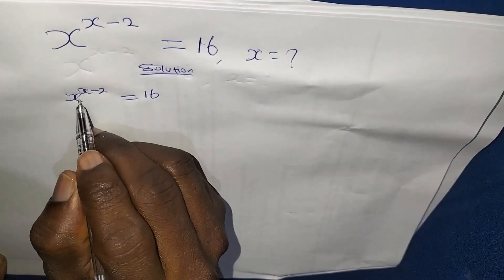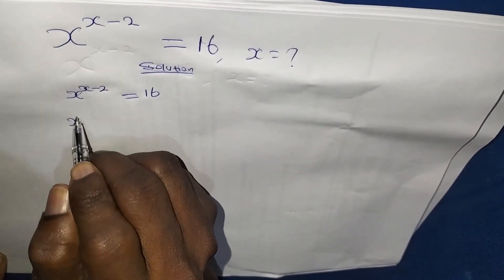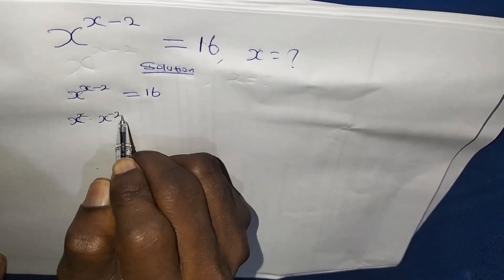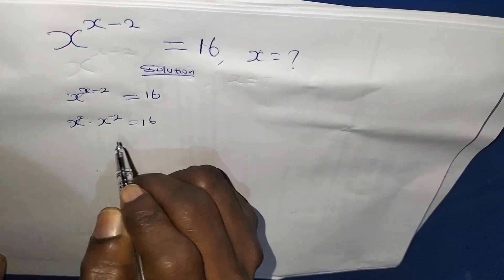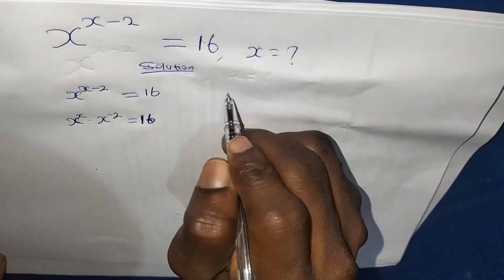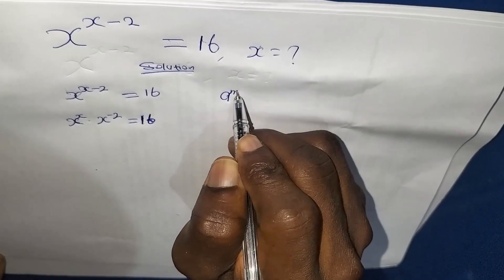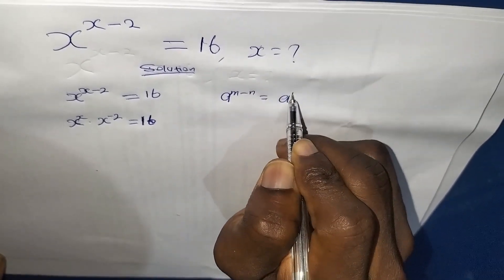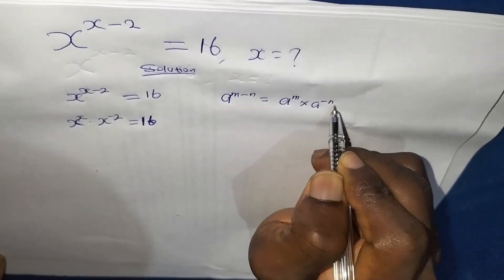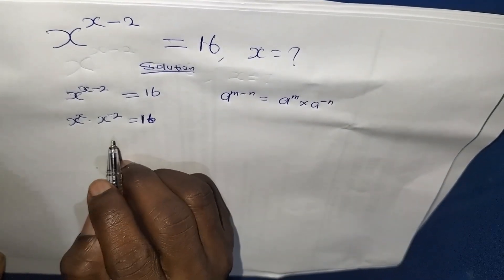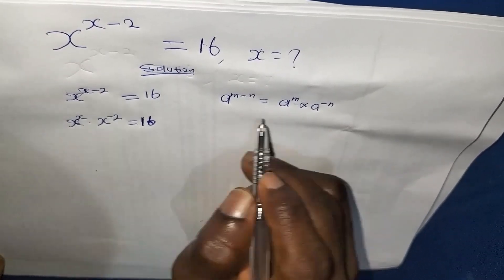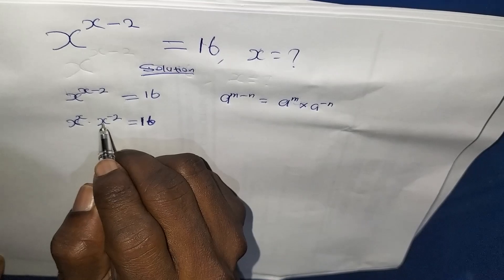I can write x to the power of x minus 2 as x to the power of x times x to the power of negative 2, because from the principle of indices: a to the power of m minus n is equals to a to the power of m times a to the power of negative n. So this principle is what I applied here.